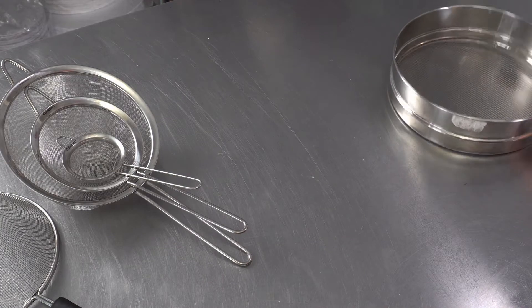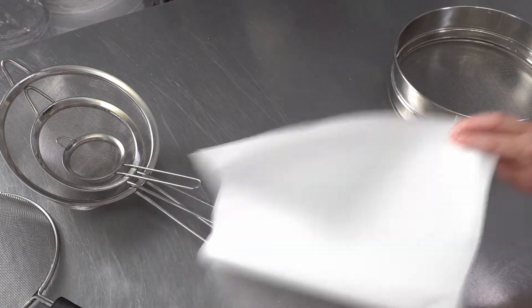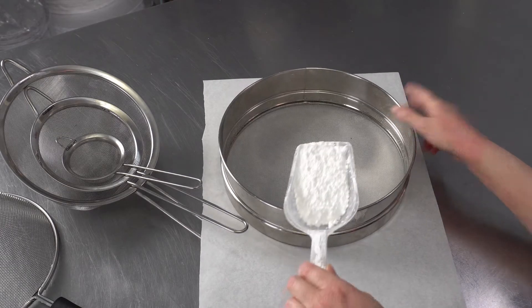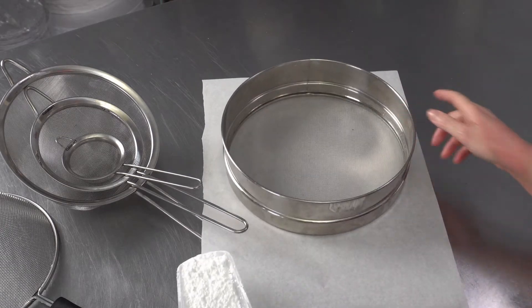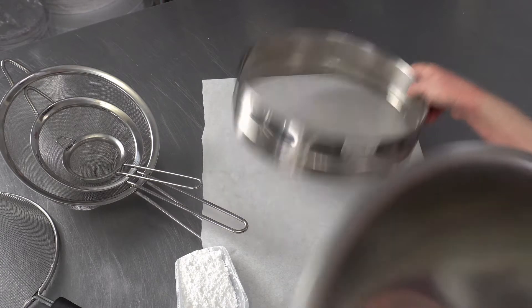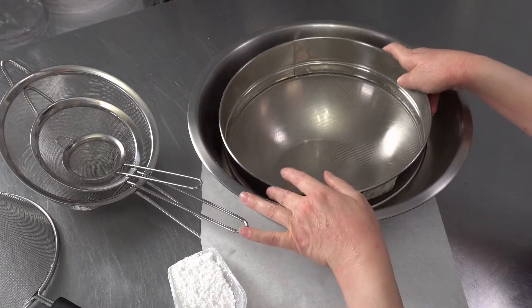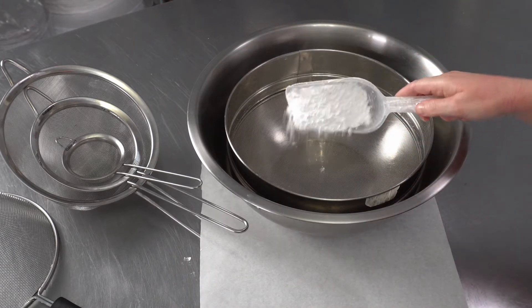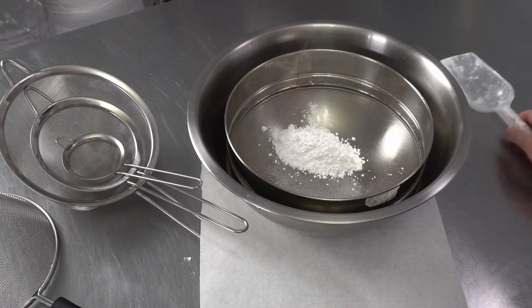Typically, we would line our surface with parchment paper and sift, or put this directly over a bowl. This is one of the things that I like about these, because literally you can use a slightly larger bowl, put the sifter down in it, and then when you go to sift your product...